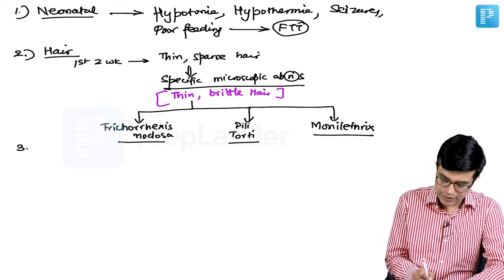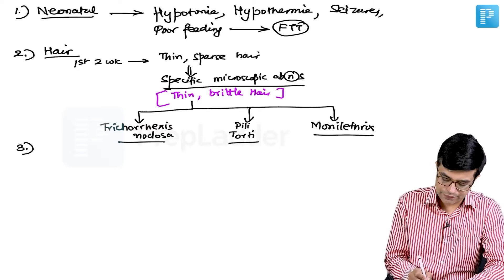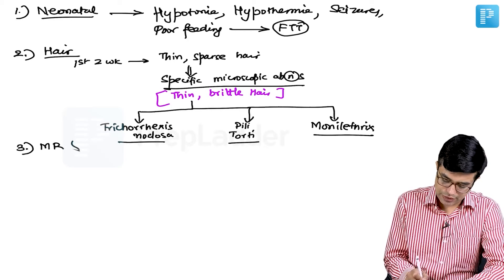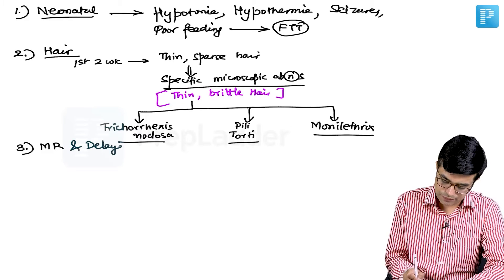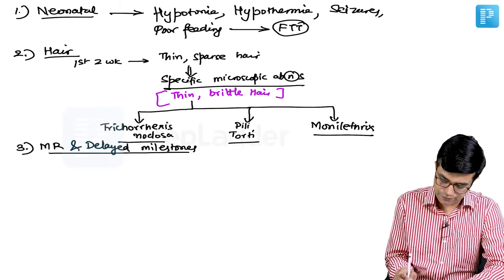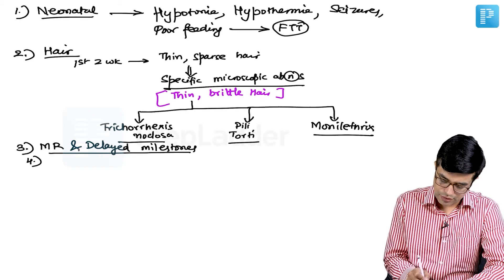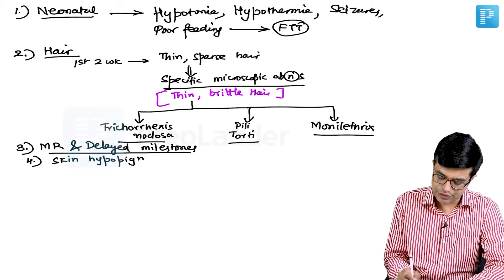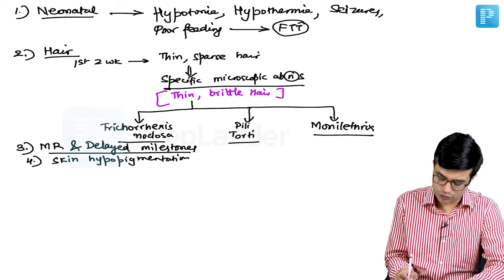Other than hair abnormalities, you will find that these children have mental retardation and delayed milestones, and some of these individuals will also have skin hypopigmentation, but it is not a very consistent feature. These are the features of Menkes Kinky Hair Syndrome.